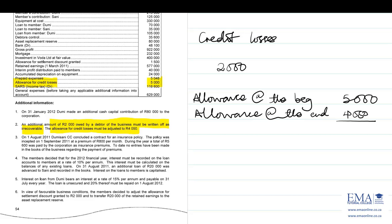Initially the allowance was 5,000 and now it's 4,050, meaning it has gone down by 950. At the beginning we were expecting to lose 5,000, but now we're expecting to lose only 4,050 — which is good for the entity. That means the credit losses went down by 950. So recording: credit losses = 2,000 minus 950.